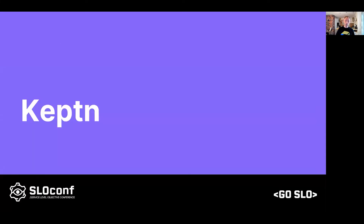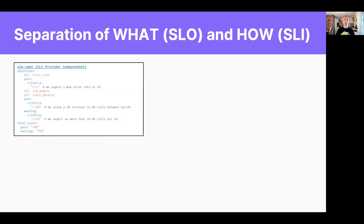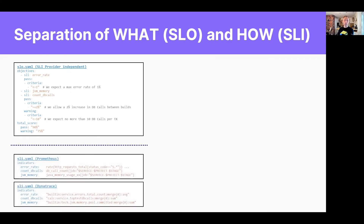From the Captain side, the open source project, we looked at all of this and said we need a standard that supports all of this. So we have a separation of what and how. You — whether you're an owner, a business analyst, whoever defines SLOs — define your error rate, JVM memory, number of database calls, conversion rate, and specify your criteria. Then whoever is responsible for getting that data from whatever tool you have — Prometheus, Dynatrace, Datadog, New Relic — specifies the queries. The SLO should always be the same, independent of how you get the data. This is a nice separation of concerns.